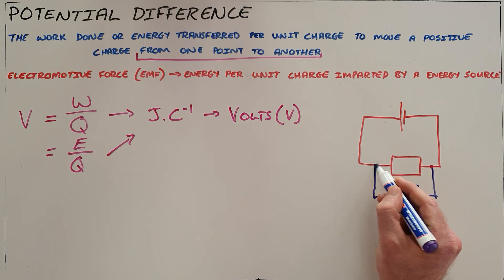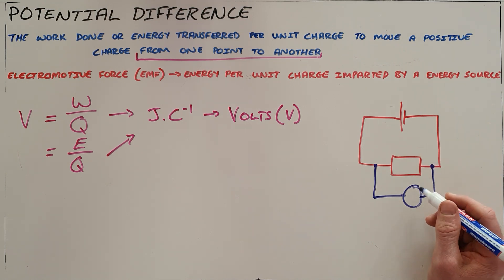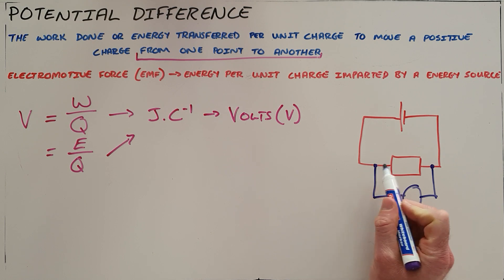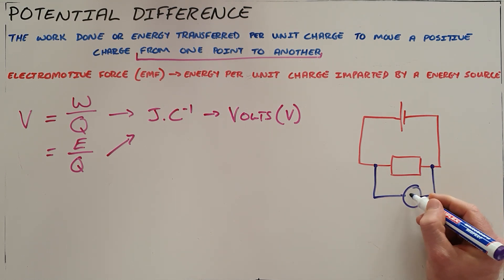The voltmeter is essentially counting the number of coulombs of charge that pass through there and measuring the amount of energy that each coulomb of charge is using to get through that.